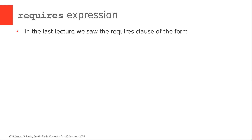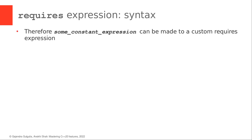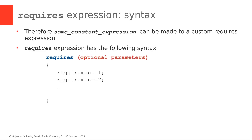In the last lecture, we saw the requires clause, and we also saw the trailing requires clause where the requires constant expression appeared after the function declaration. Now if we want to define our own expression, we need to use a requires expression — that is, some constant expression has to be converted into a requires expression. The requires expression has the following syntax: a requires keyword followed by an optional parameter list, like in the case of a function declaration, that possibly makes use of the template parameters and the template types which we want to constrain, followed by the body of the expression in which we can lay out one or more requirements. Each requirement has to be followed by a semicolon.